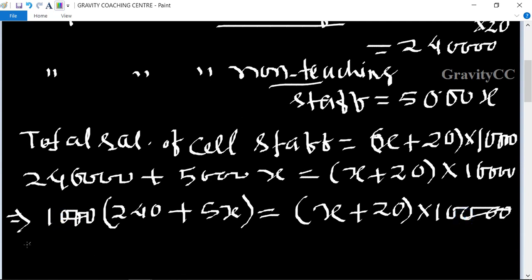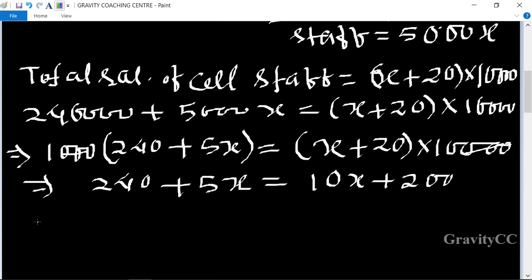240 + 5x equal to 10x + 200, and implies that 240 - 200 equal to 10x - 5x.